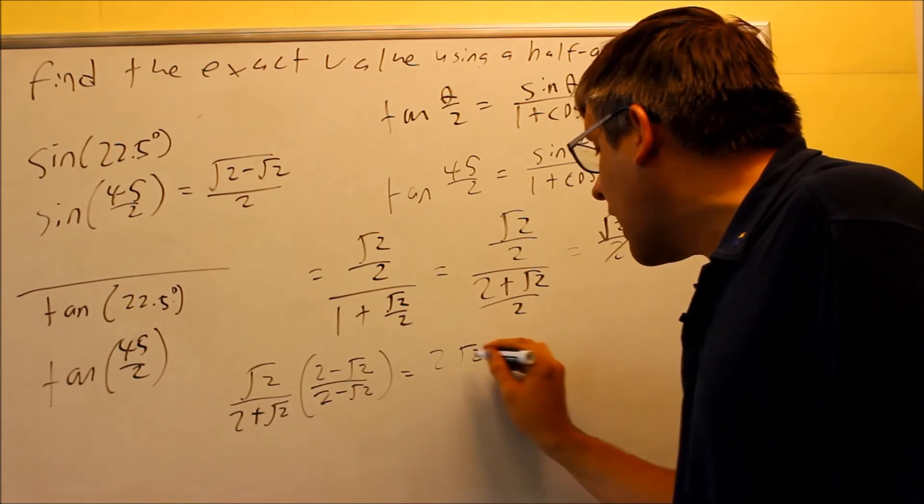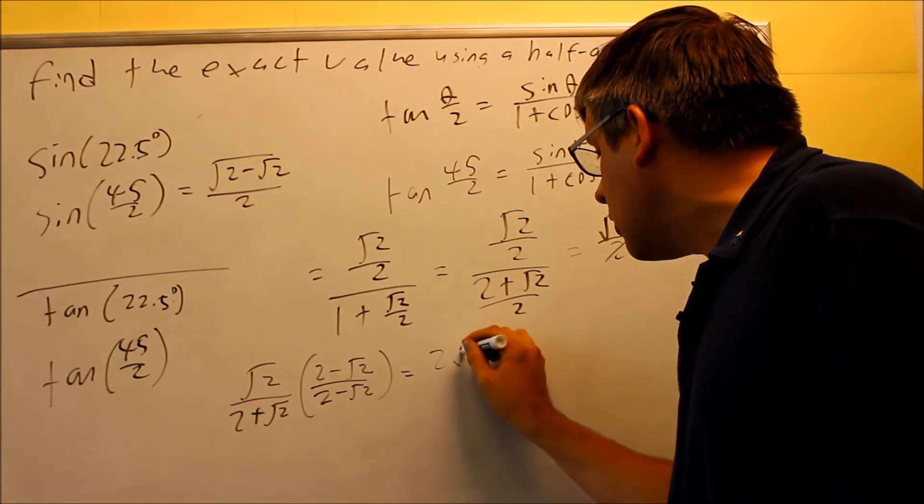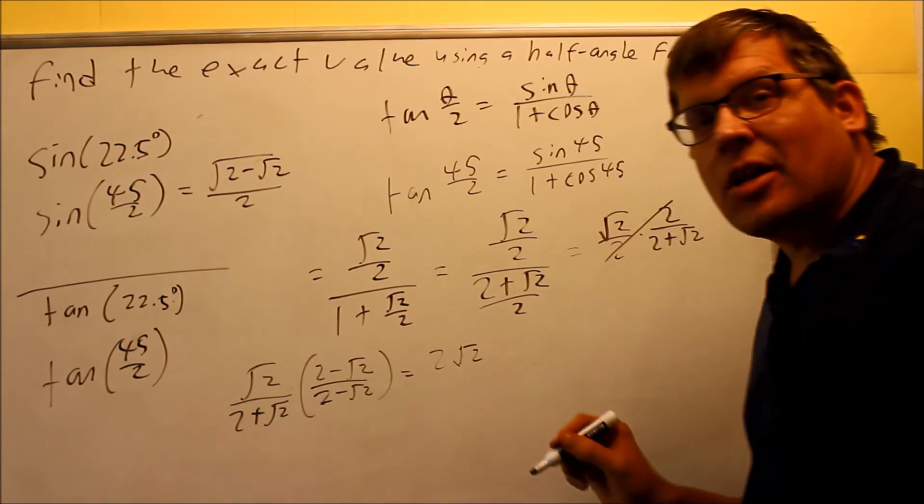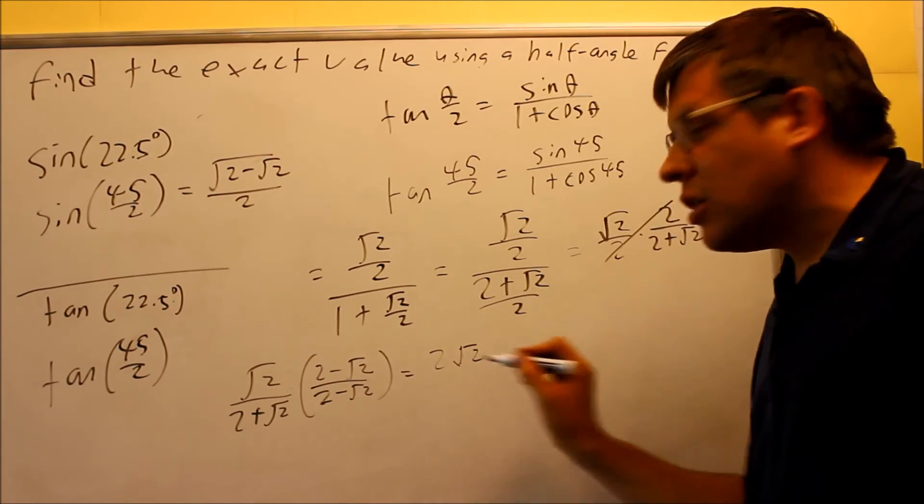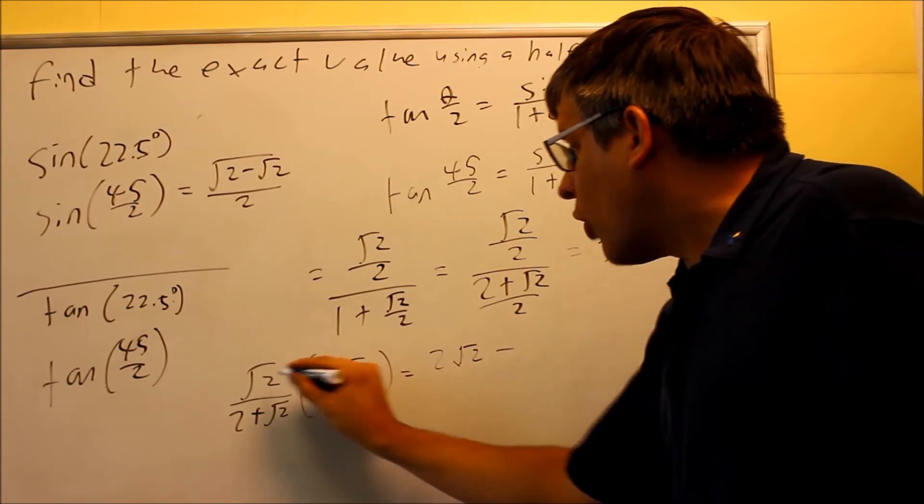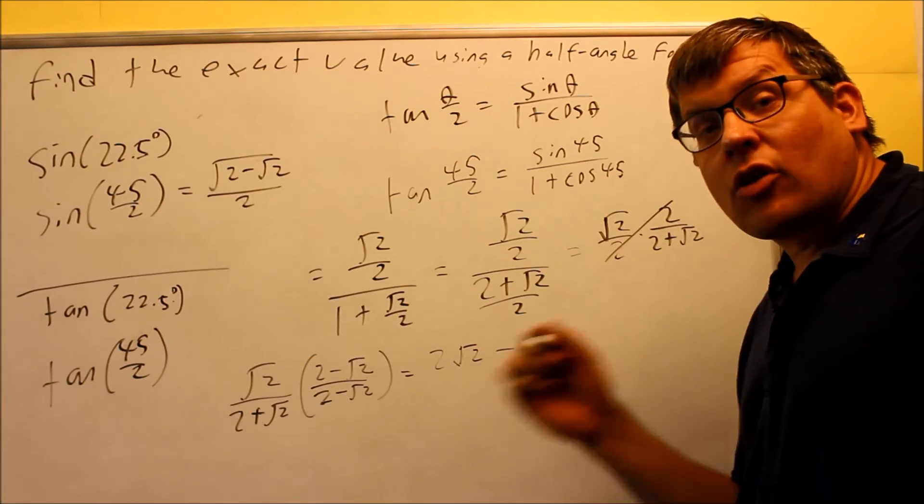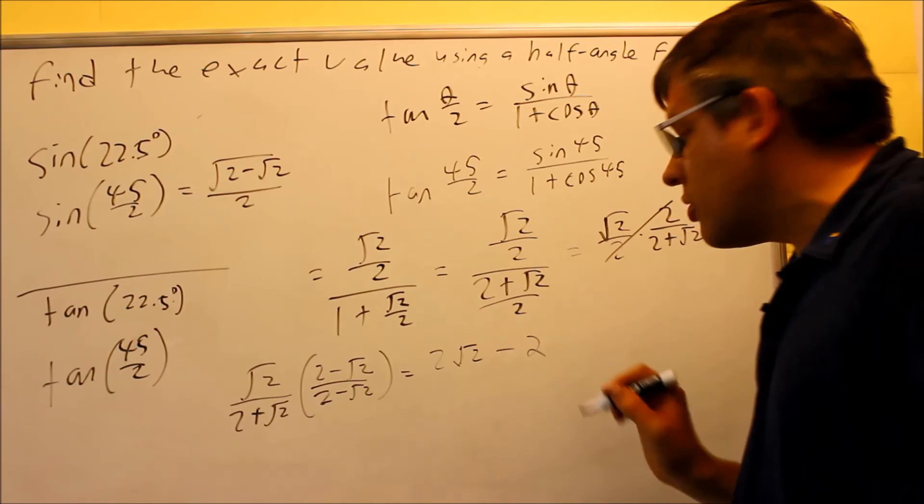So we're going to do 2 times radical 2, and we get that. Again, we're not allowed to multiply the 2 inside and make it radical 4. That 2 has to be on the outside. And next, we're going to do radical 2 times radical 2. That's radical 4. That's going to turn into a 2.